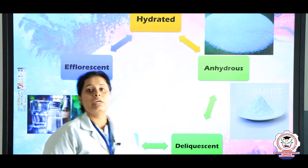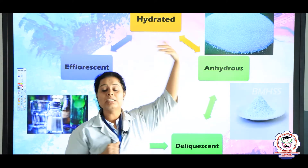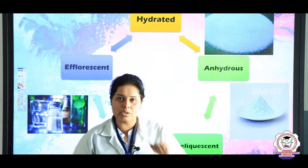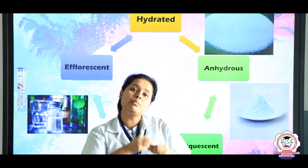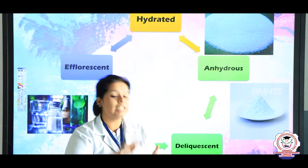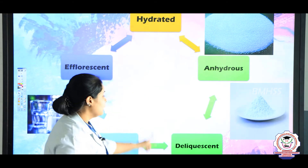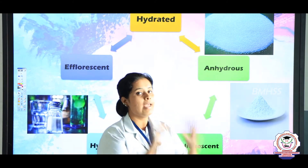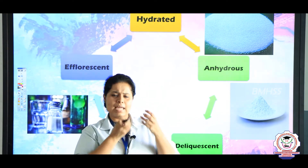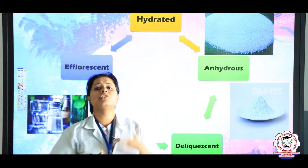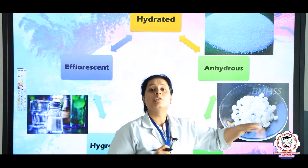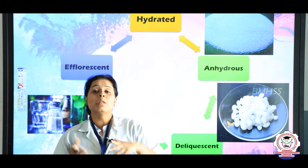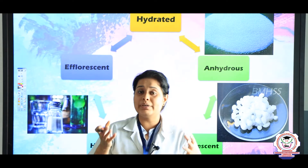Now let us come to the types of salts. The first salt type is hydrated salt — the best example is copper sulphate pentahydrate, where penta means five water molecules. An anhydrous substance is one where the water of crystallization has been removed; the example is anhydrous copper sulphate. Then there are deliquescent substances — when you keep such a substance in the atmosphere, it absorbs moisture from the surroundings and changes into a liquid or slimy form. The best example is sodium chloride pellets kept outside, which lose their solid property and become liquid.